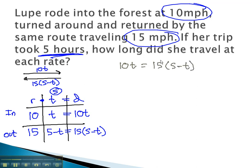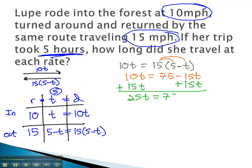We can quickly solve this equation by first distributing the 15 through, giving us 75 minus 15t. Add the 15t to both sides, so the variable is all on one side. 25t equals 75. To get the t alone, we divide both sides by 25. This gives us t equals 3.